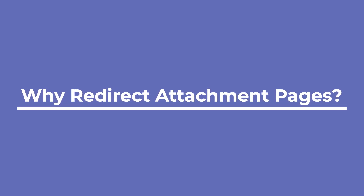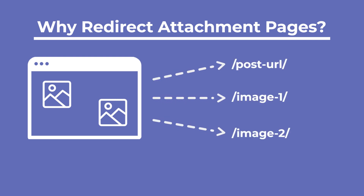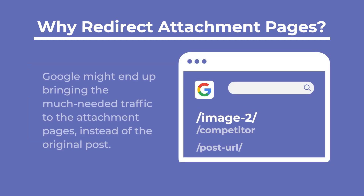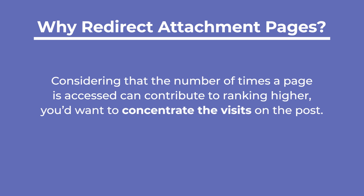Choosing not to redirect the WordPress attachment pages could have a bad impact on SEO. For example, if you create a post with two images in it, WordPress will automatically create three URLs — two for the images and one for the original post. If the attachment page is indexed and eventually appears in the search results, Google might end up bringing the much-needed traffic to the attachment pages instead of the original post. Considering that the number of times a page is accessed can contribute to ranking higher, you'd want to concentrate the visits on the post.